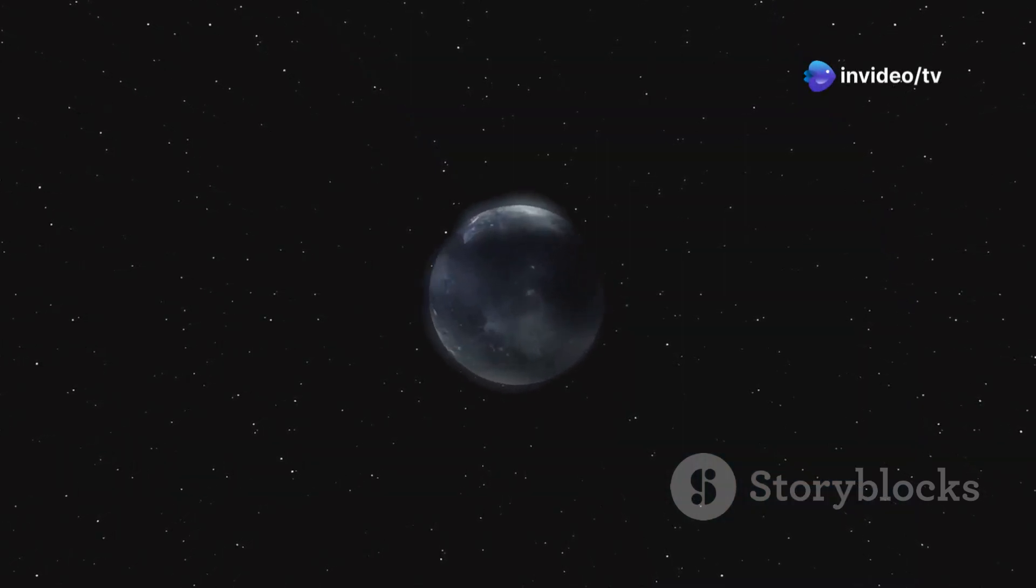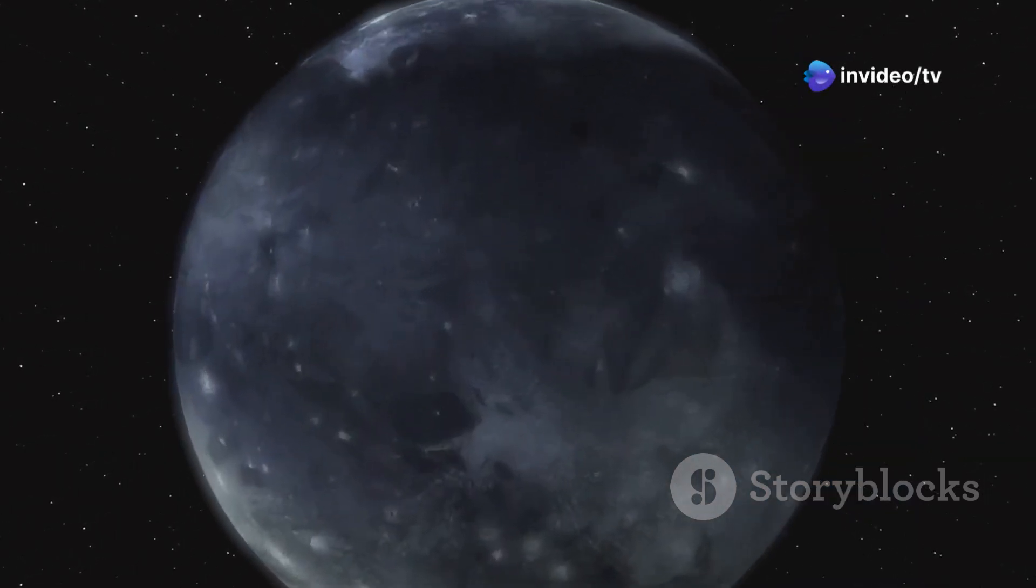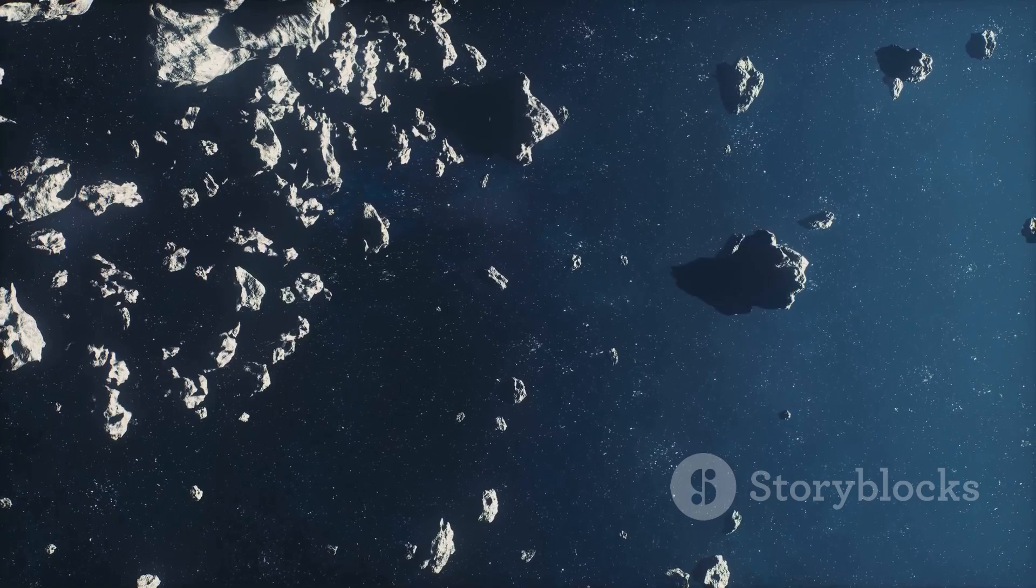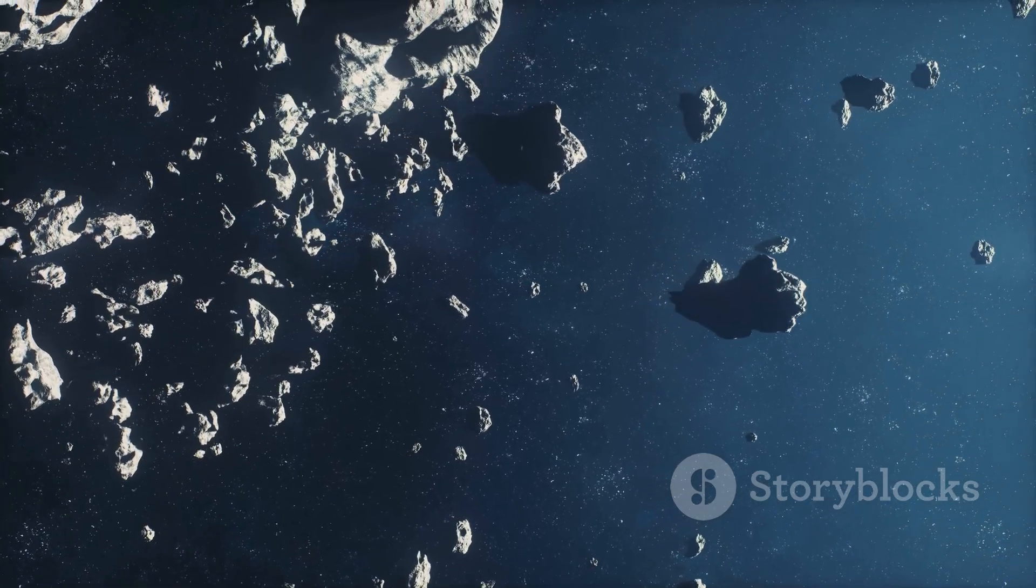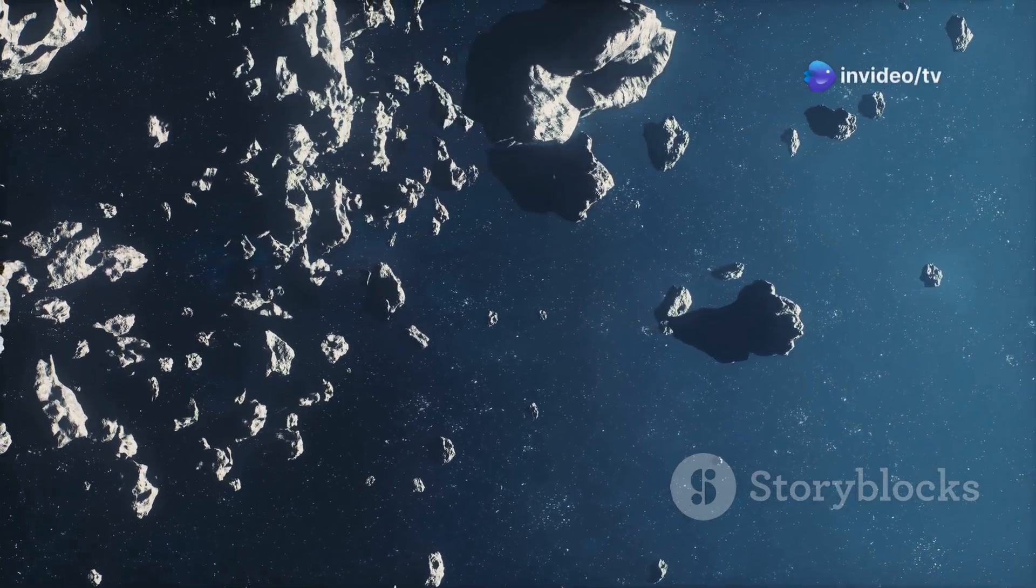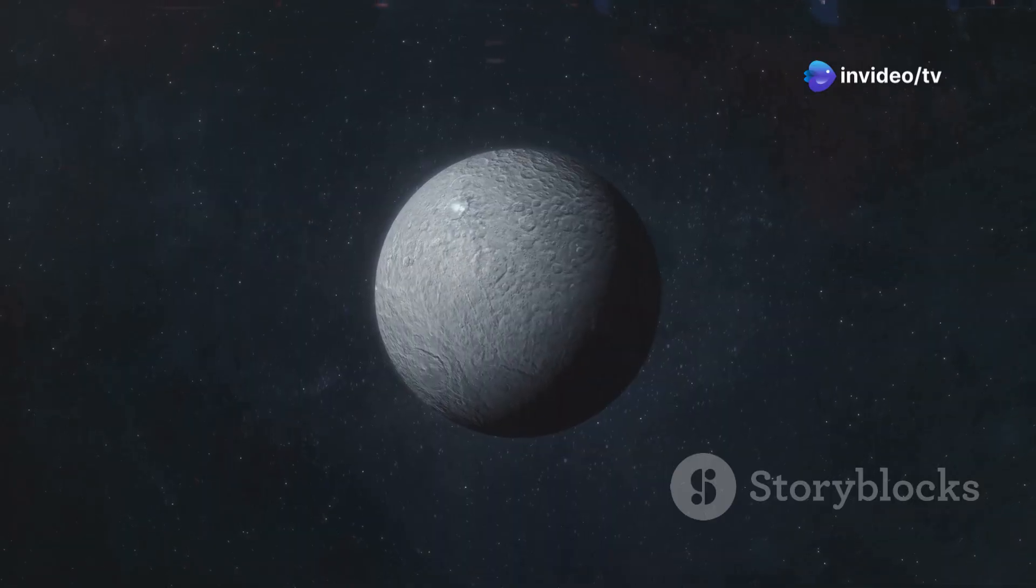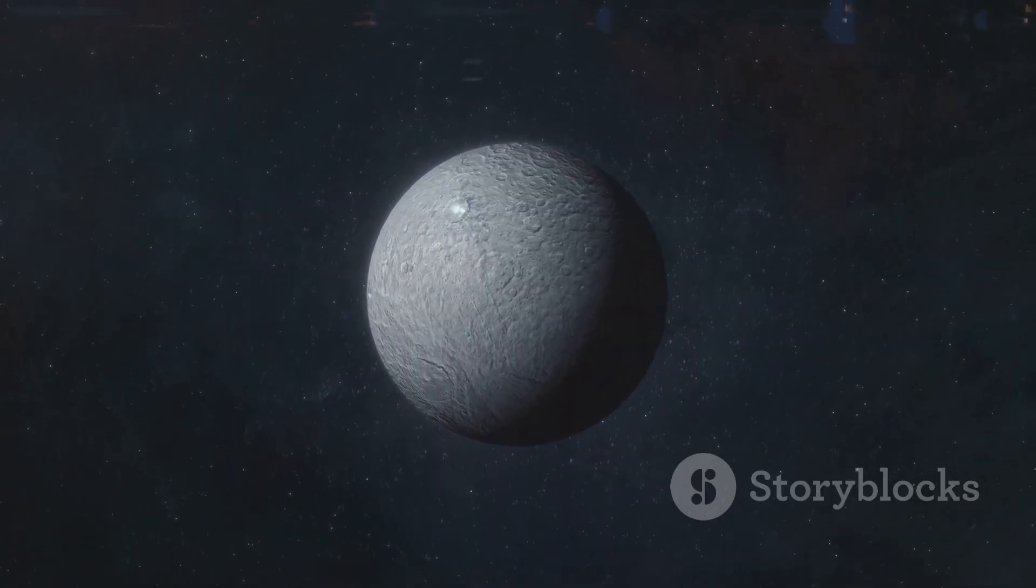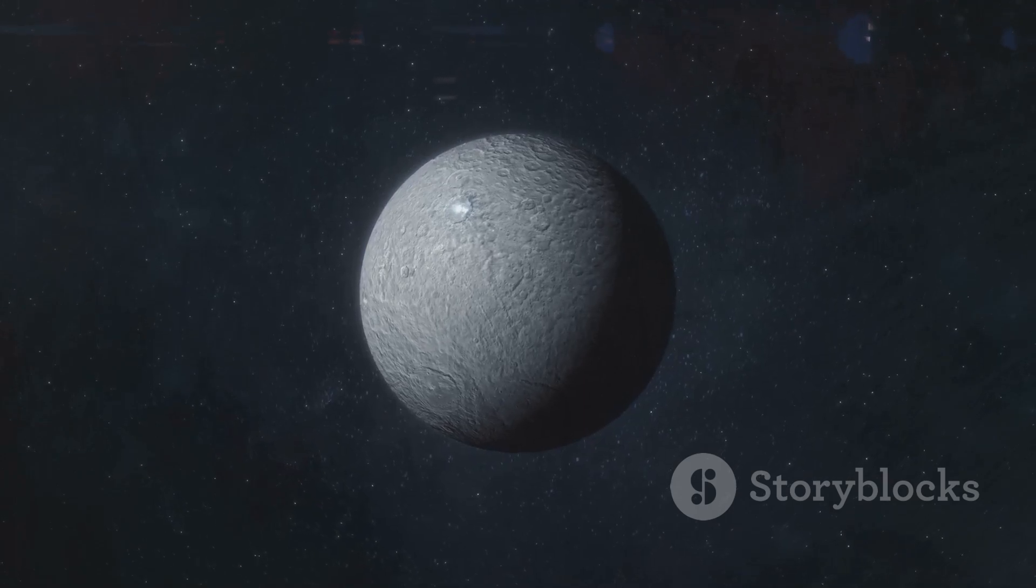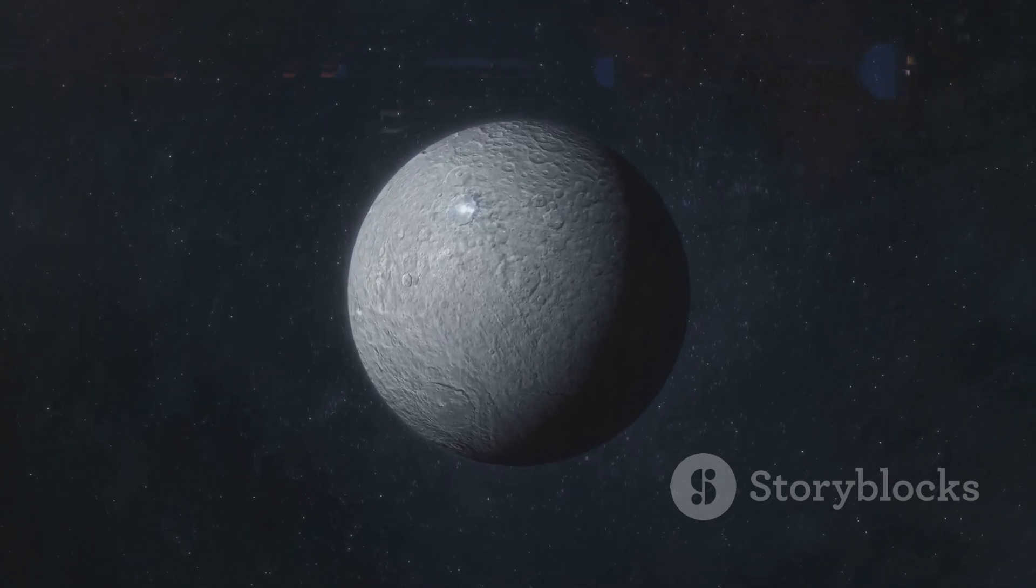But our solar system is more than just planets. It also includes dwarf planets like Pluto, which reside in the outer reaches of the solar system in a region known as the Kuiper Belt. It's also home to dozens of moons, millions of asteroids, and countless comets. These objects, though smaller, play crucial roles in the dynamics of the solar system. Moons like Europa and Titan may even harbor conditions suitable for life, while asteroids and comets are remnants from the early solar system, offering clues about its formation.